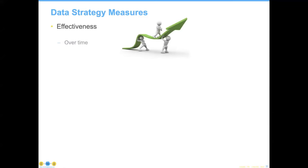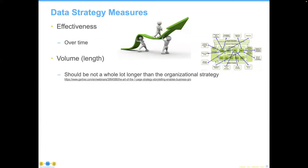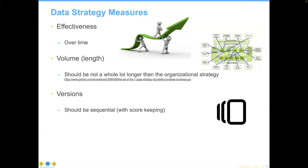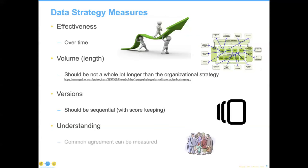The data strategy most usefully articulates how data can be best used to support the organizational strategy. It's got to involve a balance of remediation and proactive activities. No organization I've worked with over the last 35 years has zero amount of data debt. Data strategy measures: over time, we should be able to see effectiveness. The volume should not be much longer than the organizational strategy — in fact, John Ladley says the data strategy should really be the 'data chapter' of your organizational strategy. You should immediately think of this as having versions — version one, then version 1.1 or 2.0. And the goal is to share agreement among technical, business, and systems stakeholders.